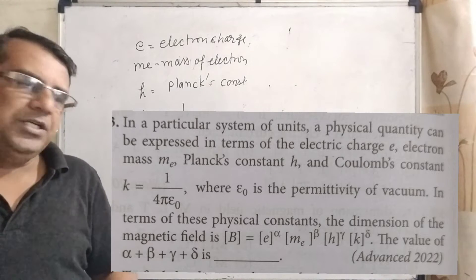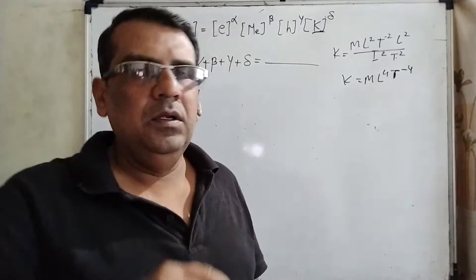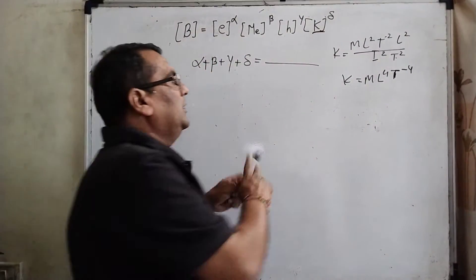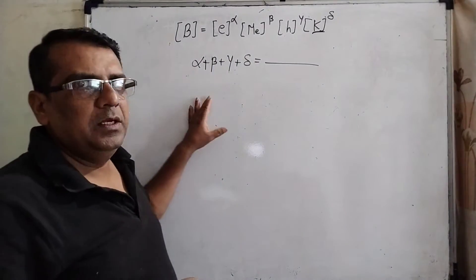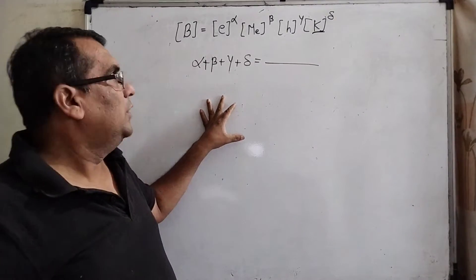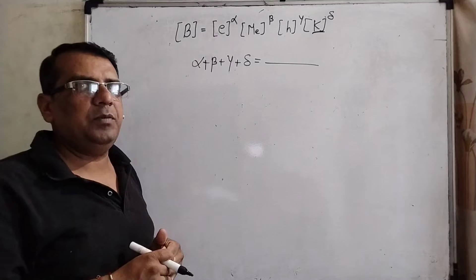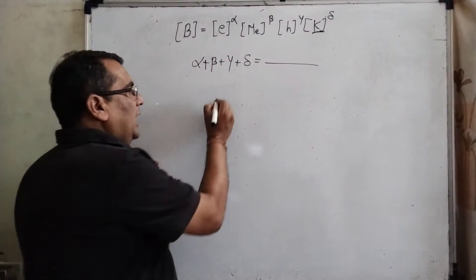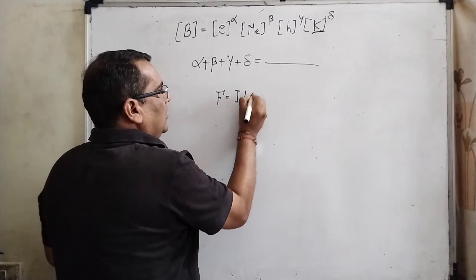This question is from JEE Advanced 2022. It is difficult to learn all dimension formulas, so you should learn derived physical quantities and their formulas. For example, for magnetic field, you know that when a current-carrying conductor passes through a magnetic field, some force is exerted, and that force is equal to F = ILB.